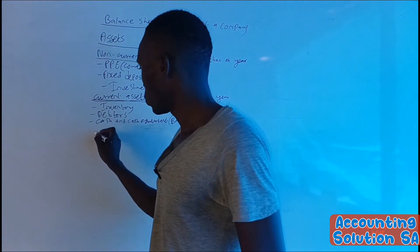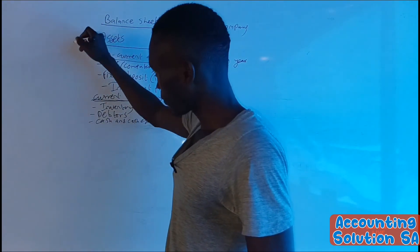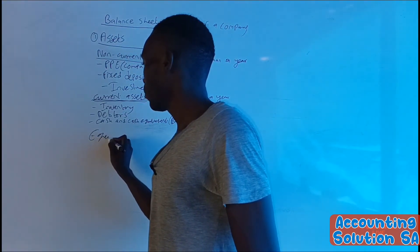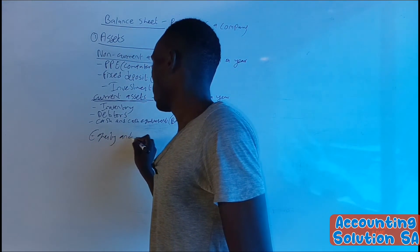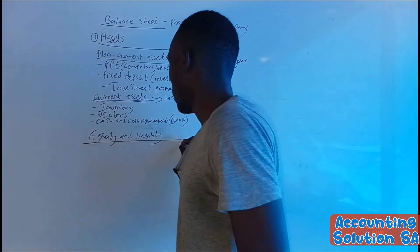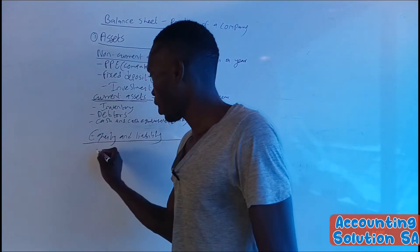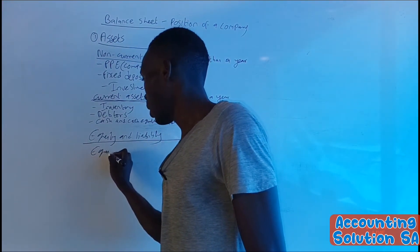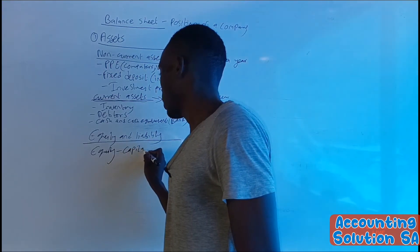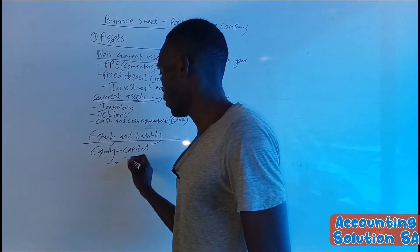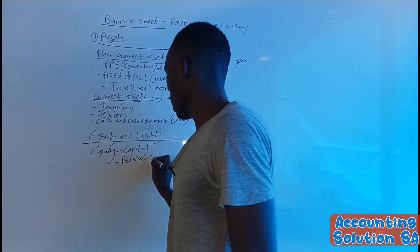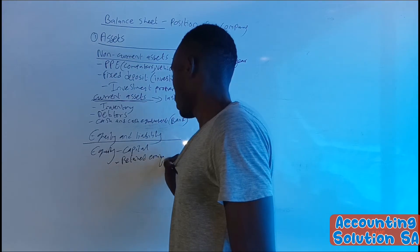Now let's go to, after assets, we have equity and liability. Then under equity, we are going to start with equity. Under equity, we have capital and we also have retained earnings.